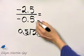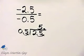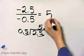So again, a negative divided by a negative is positive, and then two and five tenths divided by five tenths is five.